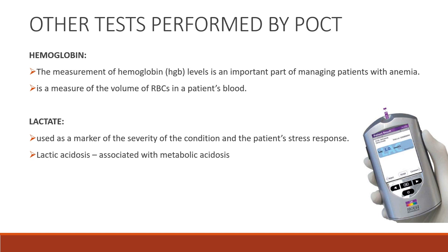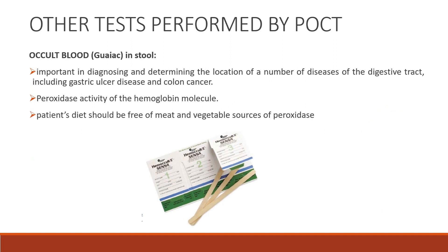Lactate is used as a marker of the severity of the condition and the patient's stress response. Elevated lactate — lactic acidosis — is associated with metabolic acidosis. Next is occult blood in stool using the GUIAC method. Occult blood means blood hidden in stool. This is important in diagnosing diseases of the digestive tract, including gastric ulcer disease and colon cancer. The principle of the GUIAC test is the peroxidase activity of the hemoglobin molecule. The patient's diet should be free of meat and vegetable sources of peroxidase.